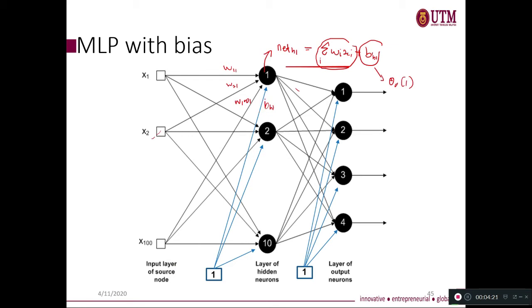Meaning that this line has their own weight. But the weight is not called W, it's called B. B there. And the input is 1. So that's why if you do the equation there, it's like a summation of WI multiplied with XI plus your bias B there.